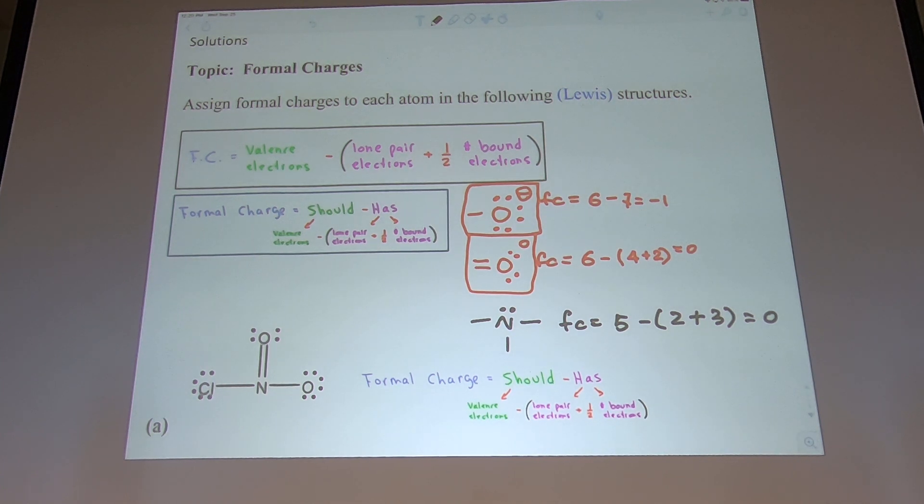If you see nitrogen with four bonds, what's the FC? Five minus zero plus four, which is plus one. This one needs to develop positive formal charge because you should have five, but you feel like having only four. You are short one electron, negative negative is a plus, right?